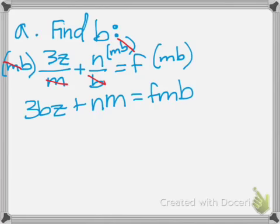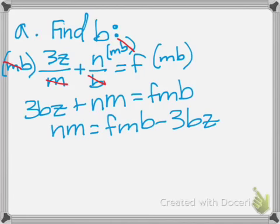Now, we're solving for b, so we have to get the b's together. We're going to subtract 3bz from both sides, and we end up with nm equals fmb minus 3bz.